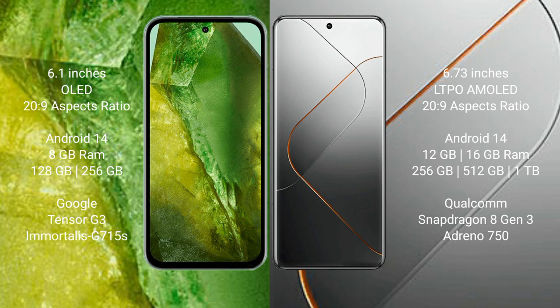Google Pixel 8a comes with 8GB RAM and 128GB to 256GB internal storage. It features the Google Tensor G3 processor and Immortalis G850 GPU.